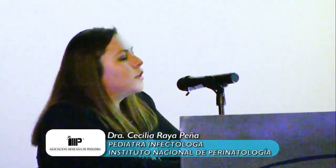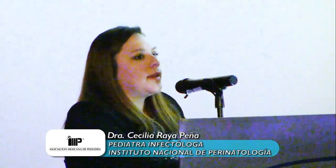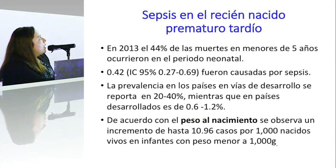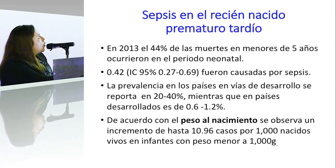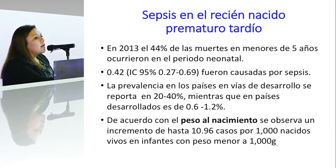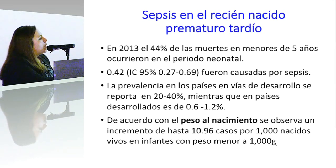Vamos a hablar sobre sepsis en el prematuro tardío. Es un tema difícil porque la bibliografía y las revisiones que se hacen son muy pocas en recién nacidos prematuros y en especial en este grupo. En 2013 se reportó que hasta el 44% de la mortalidad se presentaba en los niños menores de 5 años. De estas muertes, el 0.42 fueron causadas por sepsis, y la incidencia en recién nacidos va a diferir dependiendo del país.